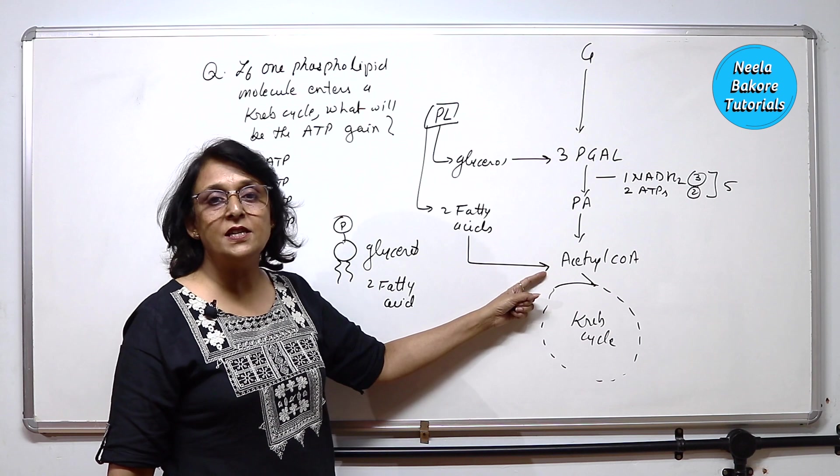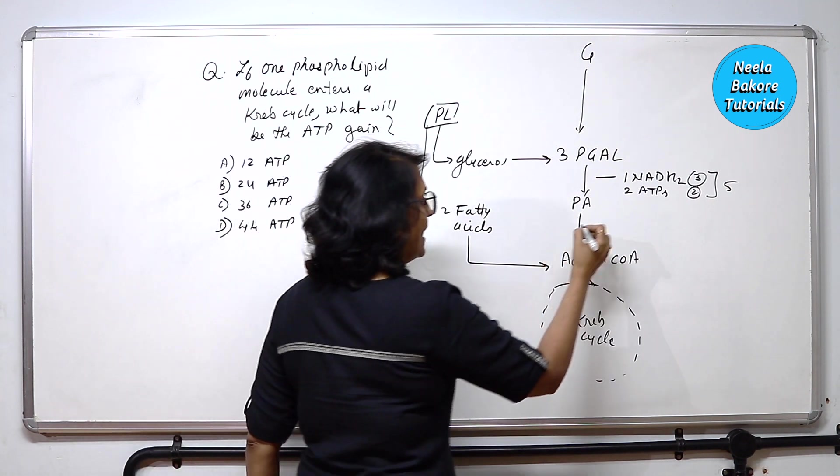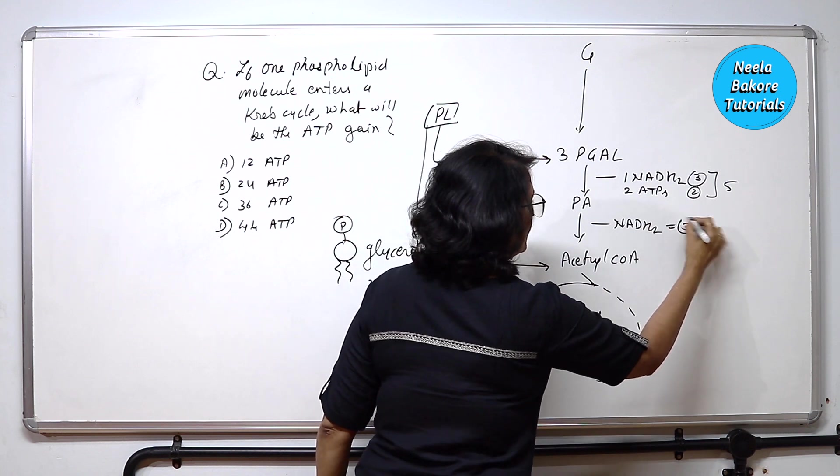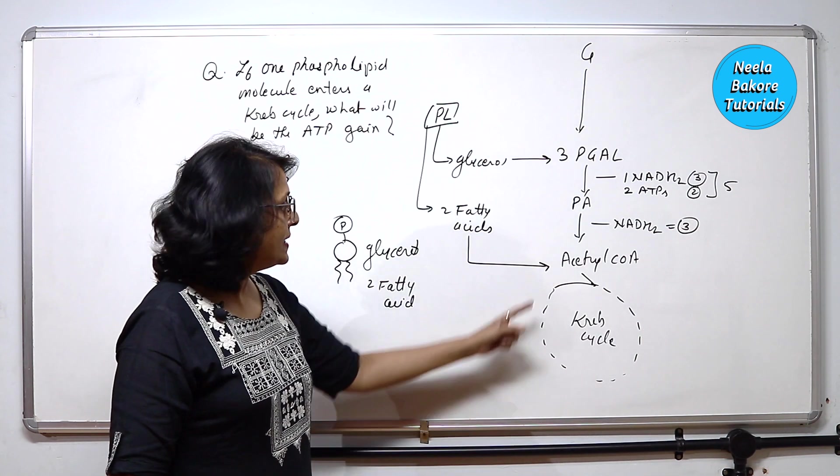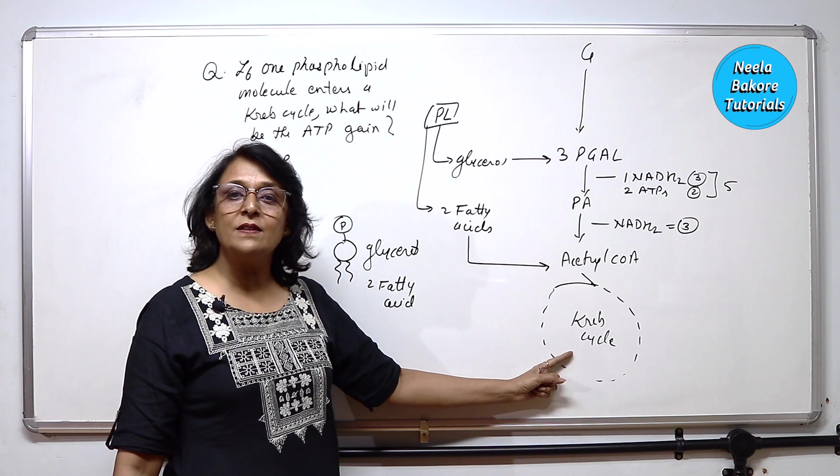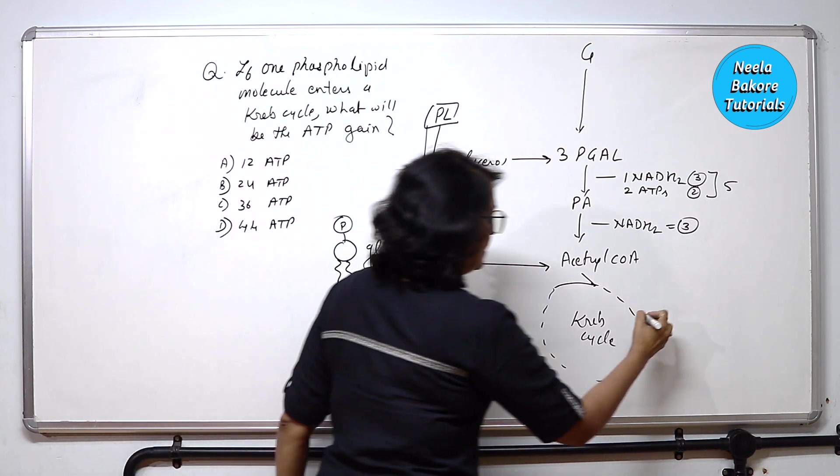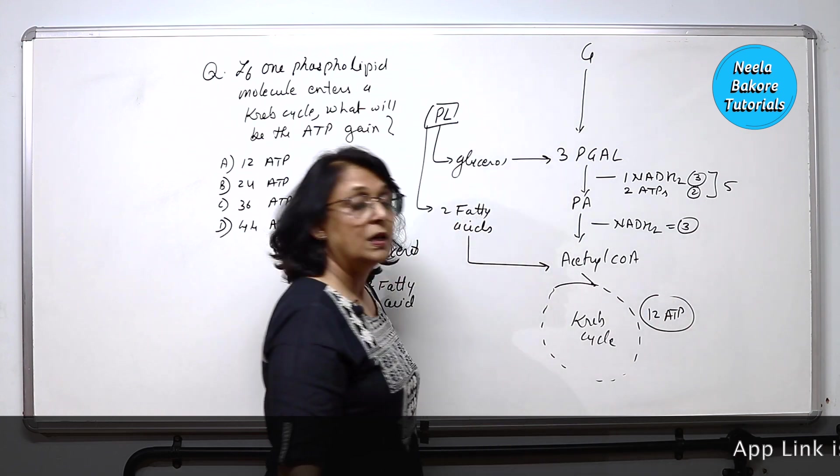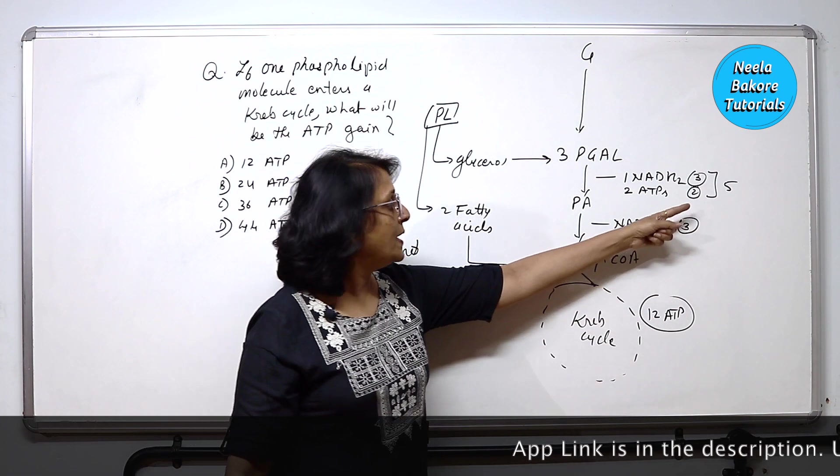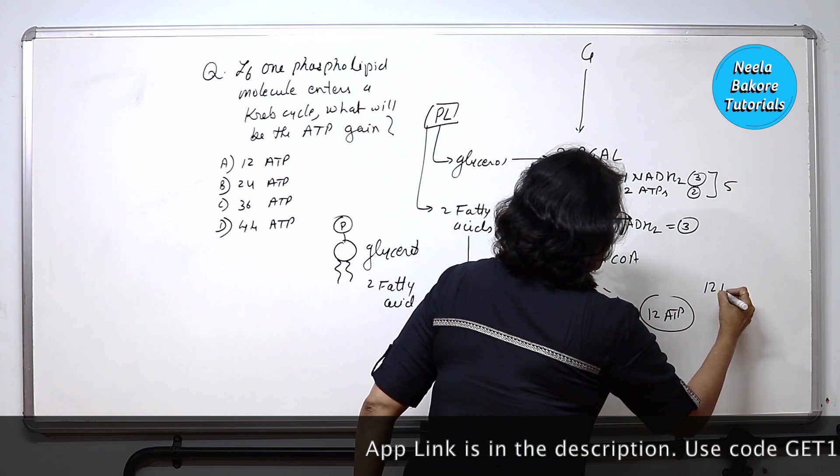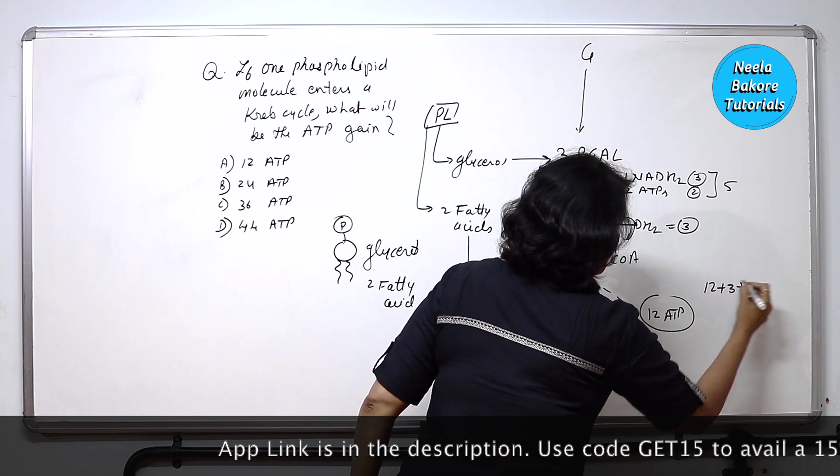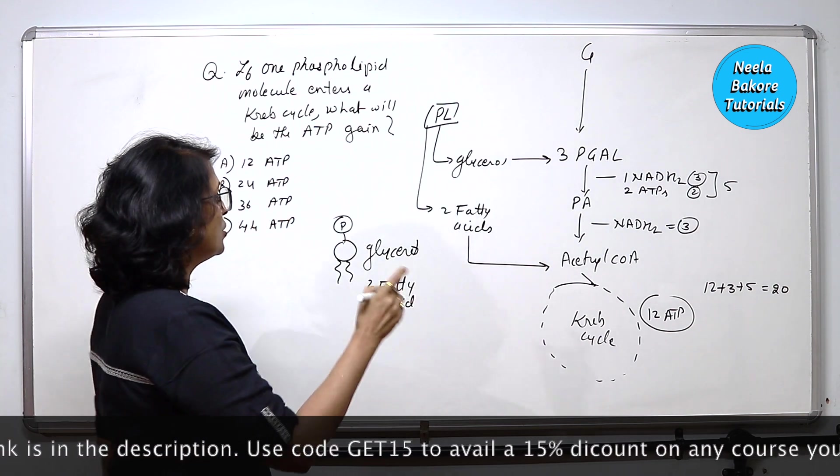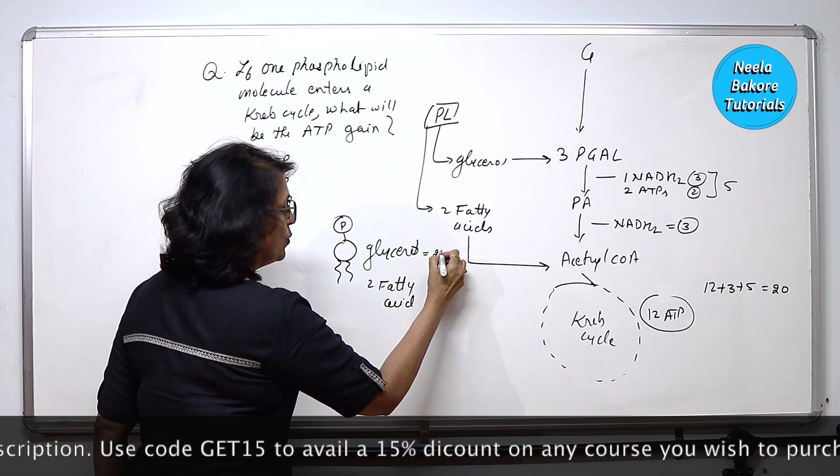Pyruvic acid when changes into acetyl coenzyme A, we get 1 NADH2. That is 3 ATPs. Acetyl coenzyme A participates in Krebs cycle. We will get 12 ATPs. So 12 plus 3 plus 5, this gives you 20 ATPs. So one glycerol is going to give you 20 ATPs.